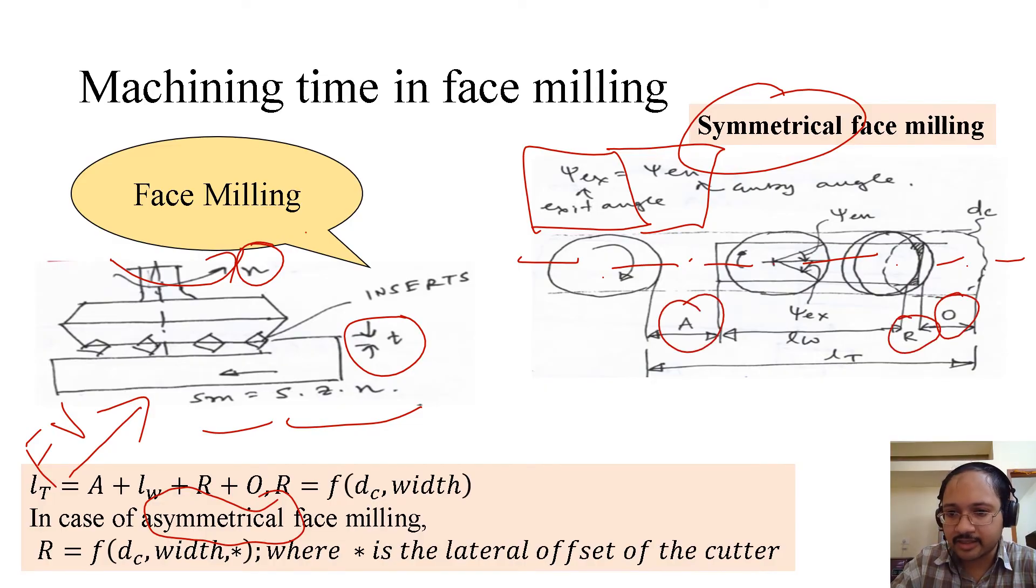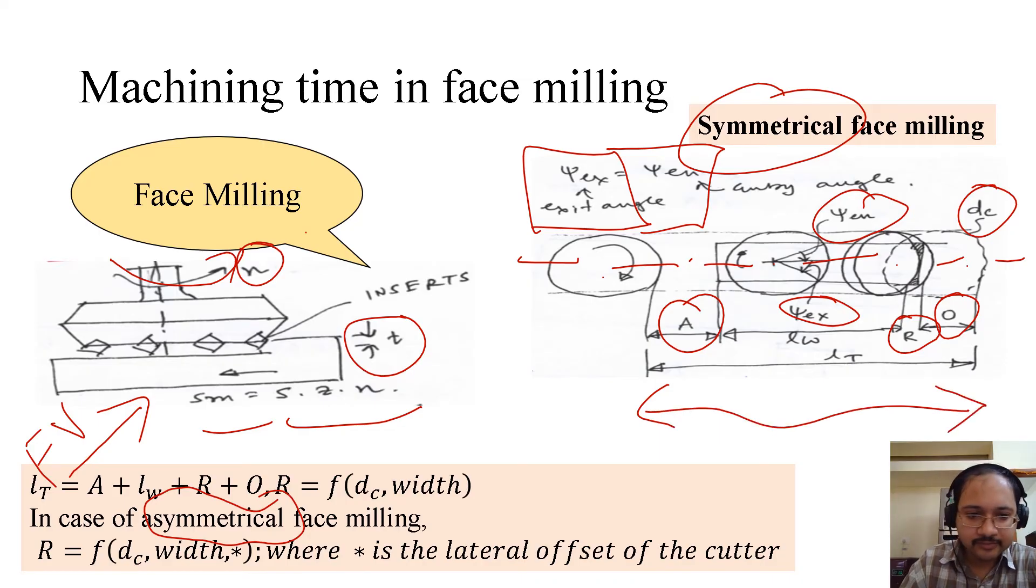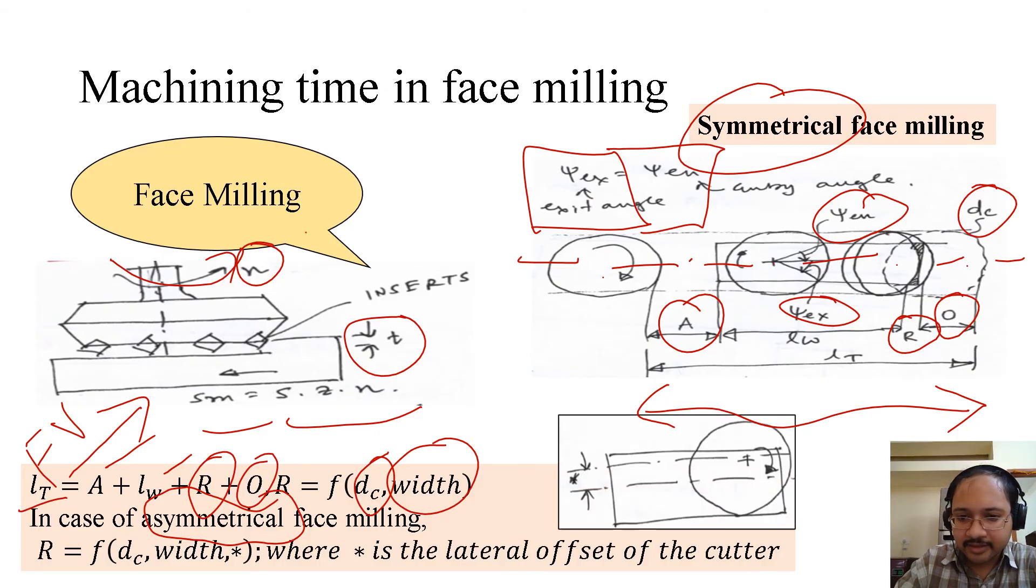Again we get approach, over travel, R, exit angle, entry angle, the diameter of the cutter, and the total tool travel. What is that? That is again approach plus lw plus R plus O. Here we can see that this R is nothing but a function of diameter of the cutter and width of the workpiece.